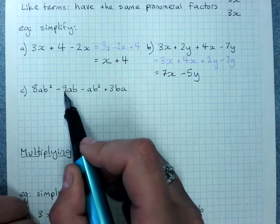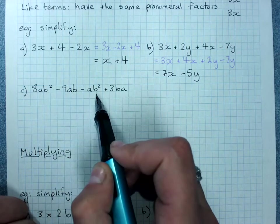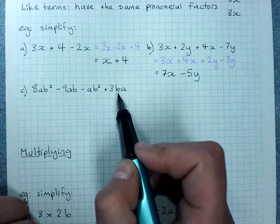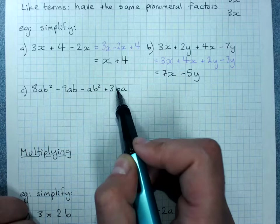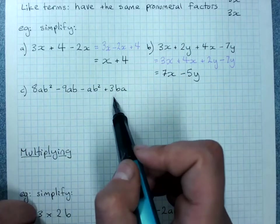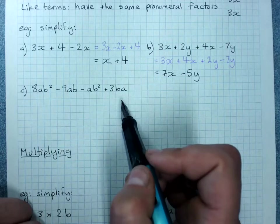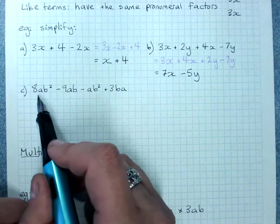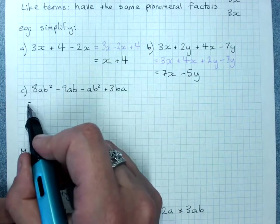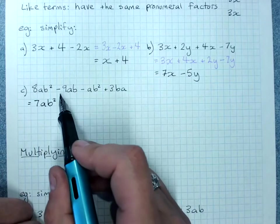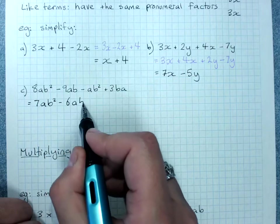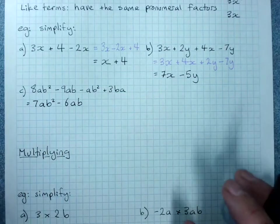8ab squared minus 9ab minus ab squared plus 3ba. Order doesn't matter. ab is the same as ba because I could rearrange this because multiplication order can be rearranged and that would be fine. Usually you'll go for alphabetical order. 8ab squared minus 1ab squared is 7ab squared minus 9ab plus 3ab is minus 6ab. So be very careful with your like terms.